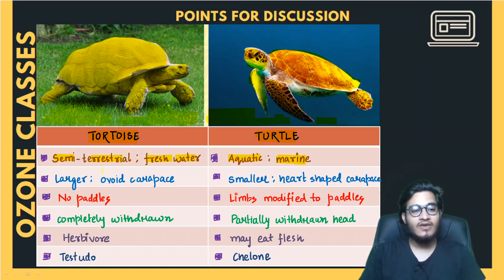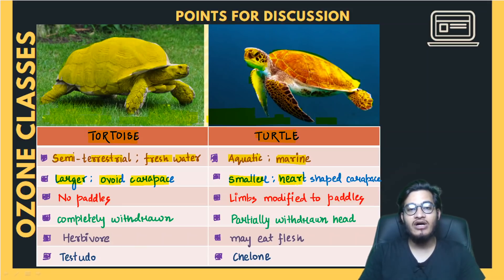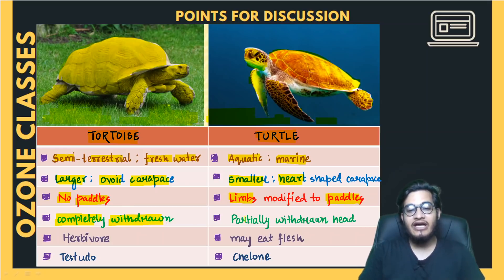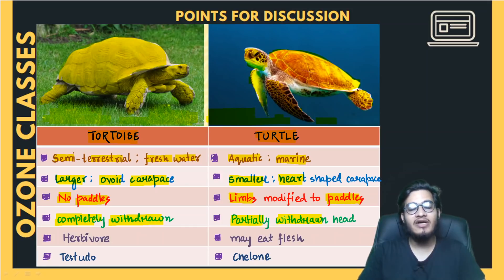To summarize: the tortoise is large and its carapace is ovoid in shape, whereas the turtle is smaller in size and its carapace is heart-shaped. The tortoise doesn't need paddle-type feet, but the turtle lives in water so its four limbs and hind limbs are converted into paddles for swimming. The tortoise can completely withdraw its head into the shell, while the turtle can only partially withdraw its head — a part always remains projected outside.